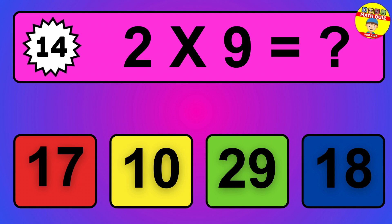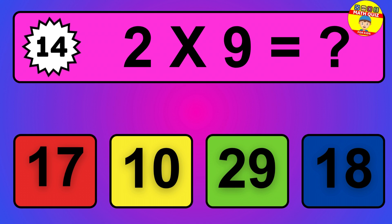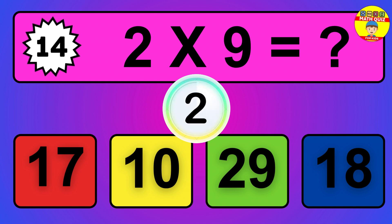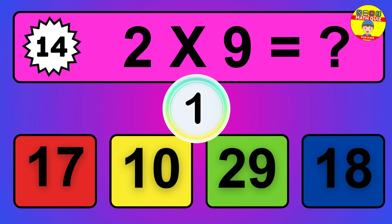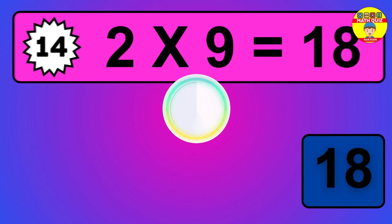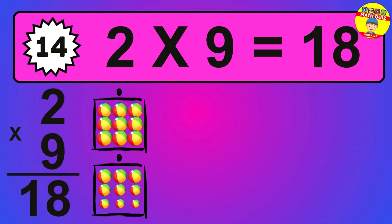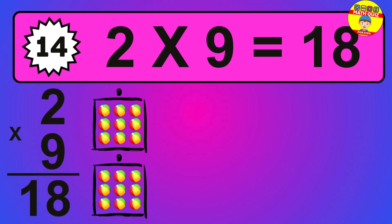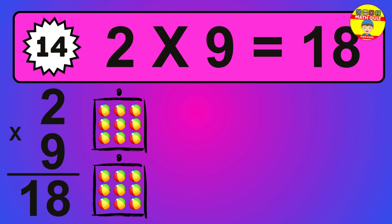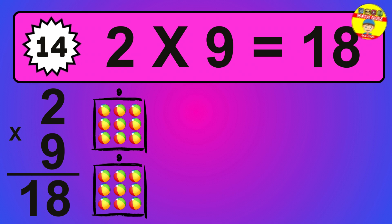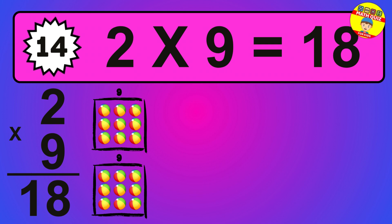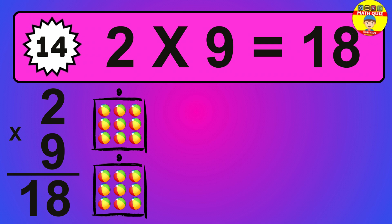Question 14. 2 times 9 equals what? So the answer is 2 times 9 is 18. To calculate, we have 2 groups with 9 balls each one. So how many balls do we have? 18 balls.